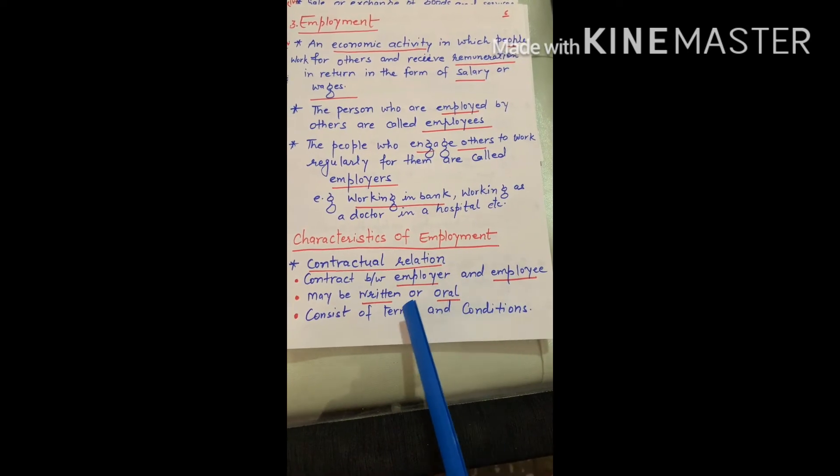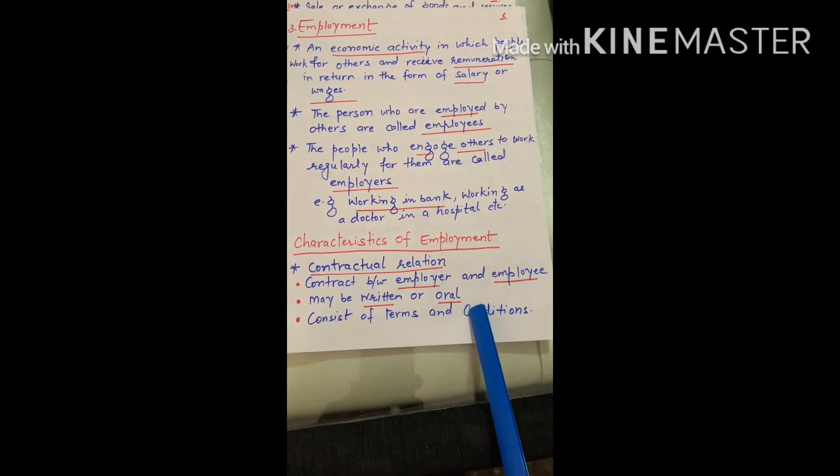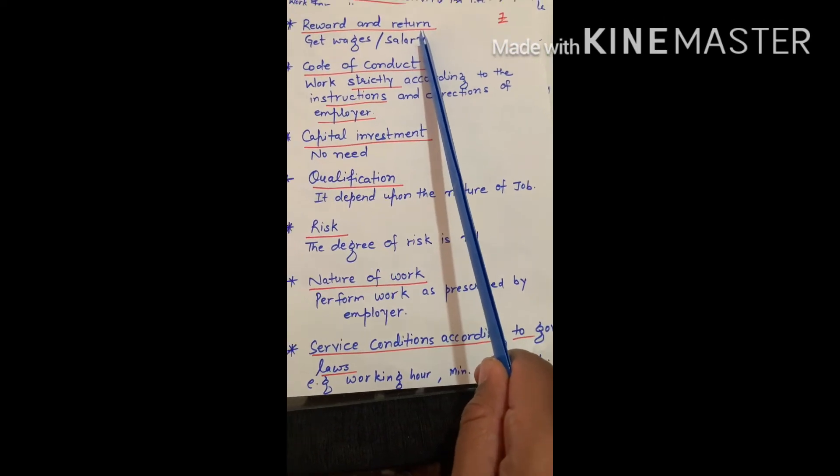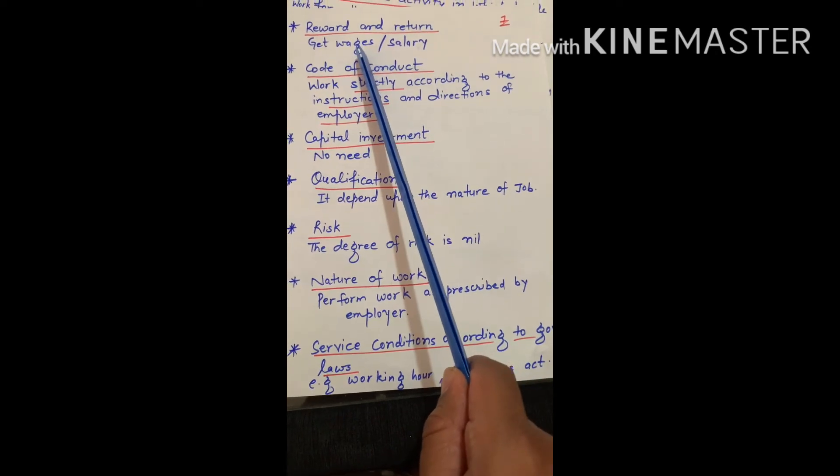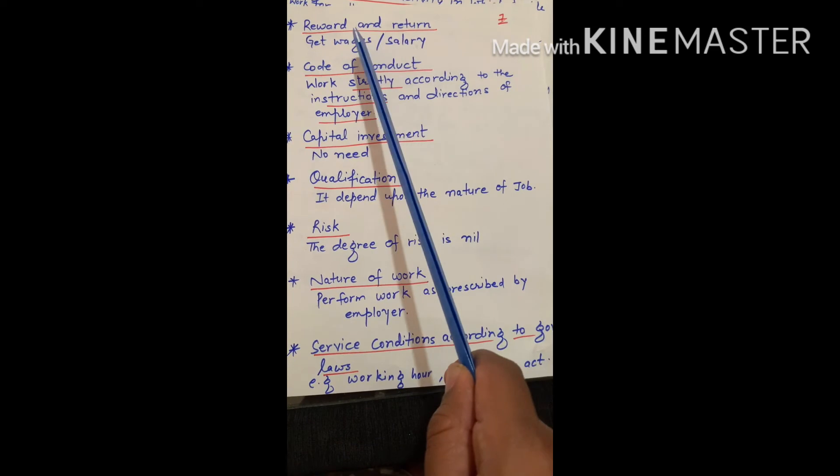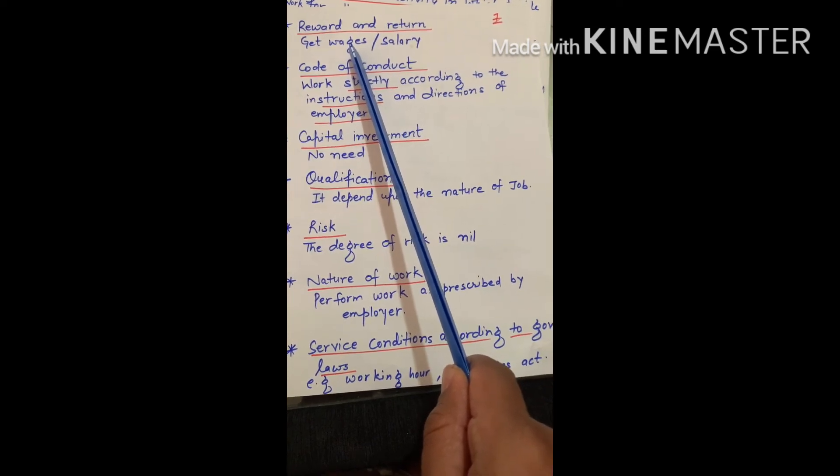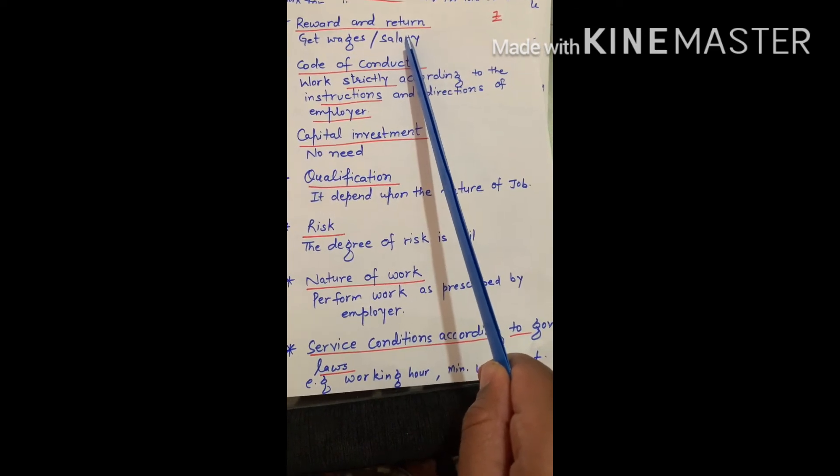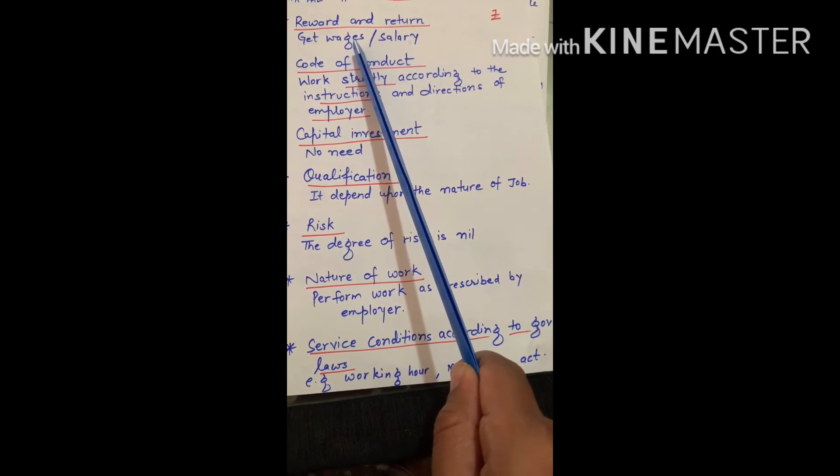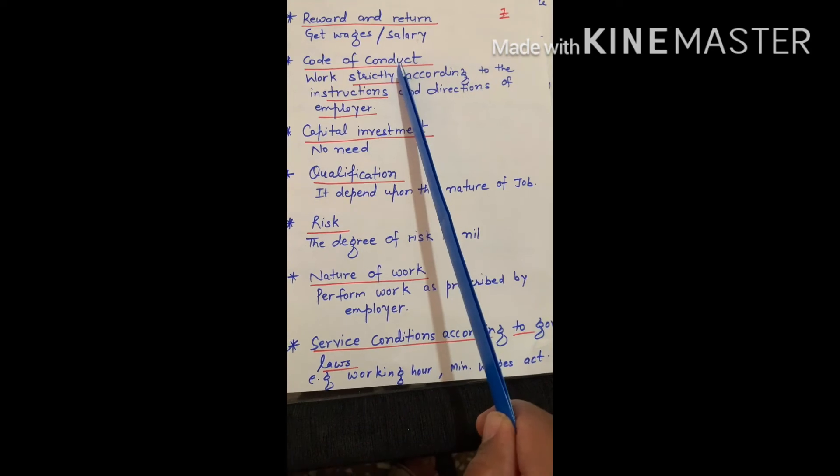Second is reward. In employment, employee gets salary or wages. Wages for blue collar and salary for white collar. Wages we are giving to unskilled employees and salary we are giving to skilled employees. Wages can be monthly, daily, weekly. Code of conduct: there are some rules and regulations which is formed by employer and we have to follow them.